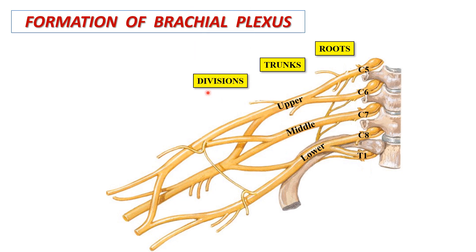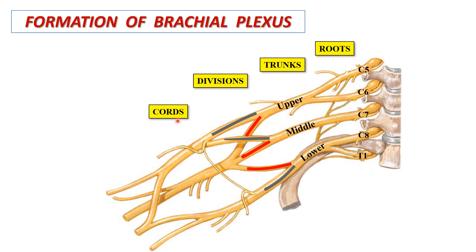Each trunk further divides into anterior and posterior divisions. Such divisions unite to form the cords of the brachial plexus. The anterior divisions of the upper and middle trunks unite to form the lateral cord. The anterior division of the lower trunk continues as the medial cord, whereas the posterior divisions of all three trunks unite to form the posterior cord. So there are three cords of the brachial plexus.